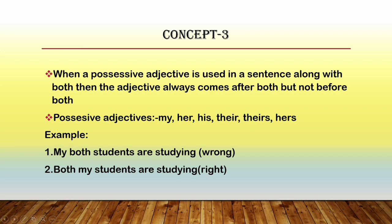To make this concept clear, I have given two examples. In the first one you can see: 'My both students are studying.' Here, 'my' is a possessive adjective but it is placed before 'both', so the sentence is wrong. In the second one: 'Both my students are studying.' Here, 'my' is a possessive adjective placed after 'both', so the sentence is correct. This is the third concept of the second rule.